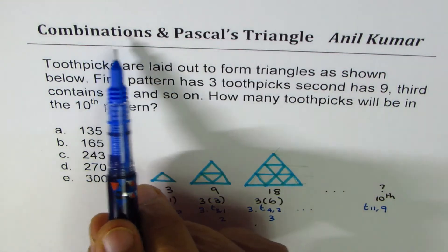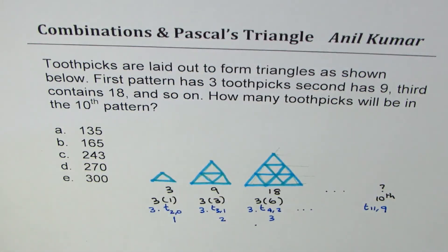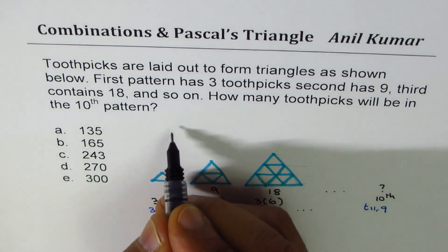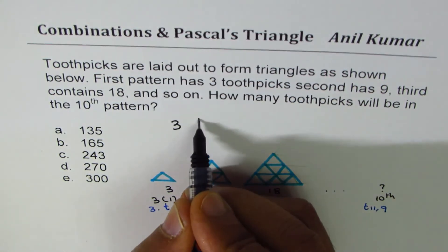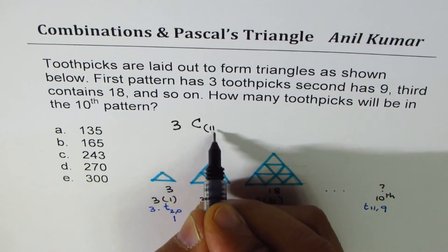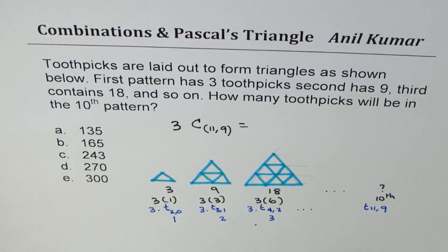Now, the beauty of combinations with Pascal's triangle is that you can quickly calculate this number using combinations, right? So basically, in the 10th pattern, we are looking for 3 times C(11,9). So that is what you are looking for.